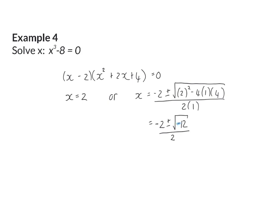When you simplify, you will find a negative value in your square root, and that means we have non-real solutions. So here we have only one real solution for this equation, and that is x equals 2.